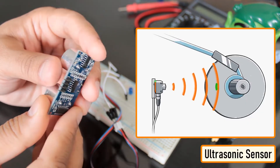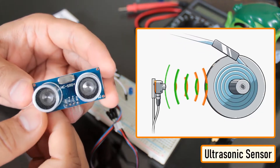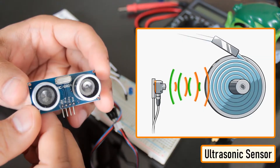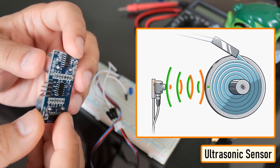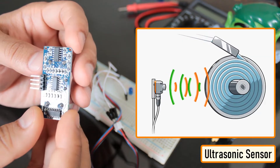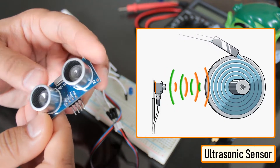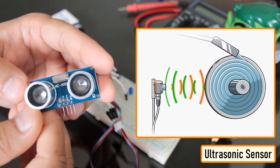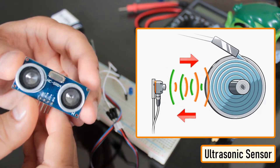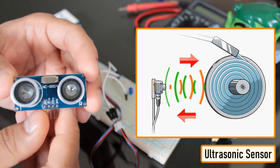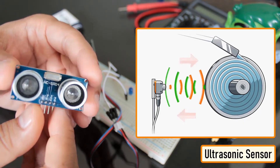Another common method of proximity sensing involves using reflected ultrasonic or light beams. Using these sensors, the intruding object is detected by the reflected beam back to its source. The time delay between the transmission and reception is measured to calculate the distance to the object.